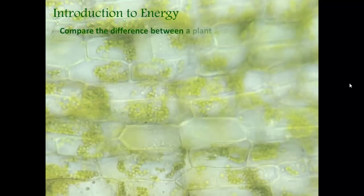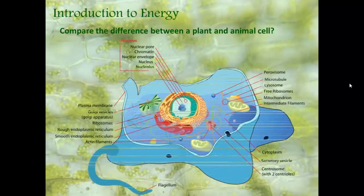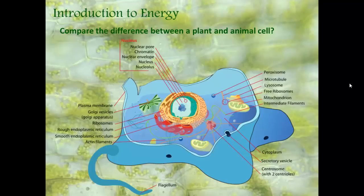Let's compare the difference between a plant cell and an animal cell. As you can recall, there are many components to an animal cell. Yet, what is unique to an animal cell? There are two components that are unique to an animal cell that are not found in plant cells. I'll give you a few seconds to find them.